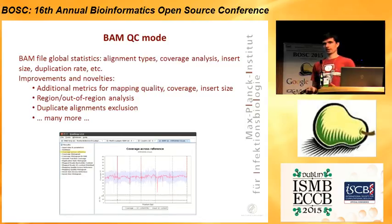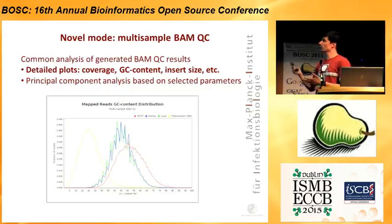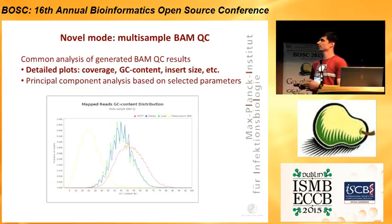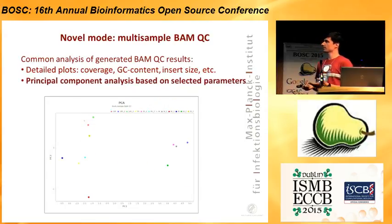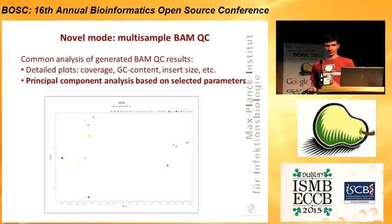What is happening now is that sequencing experiments have a lot of samples. If three or four years ago it was only two or three experiments, now it's 100 BAM files available. That's why there was a novel method introduced called Multiple BAM-QC Analysis. It allows to compare all the samples' BAM-QC results together, such as coverage, GC content, and insert size. And there is also PCA analysis, which allows to detect if there are some outliers in the performed experiment.